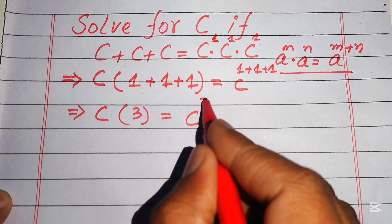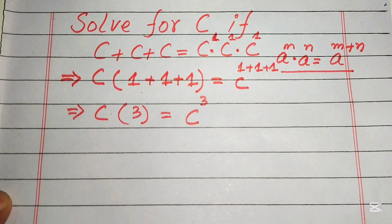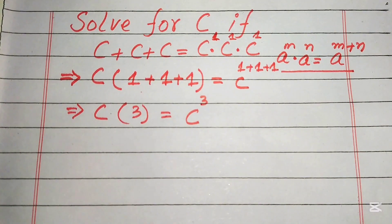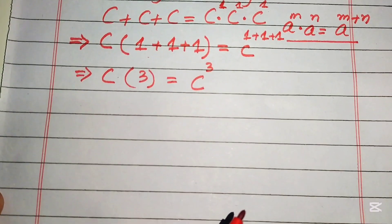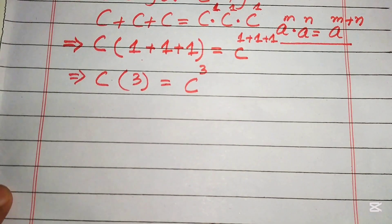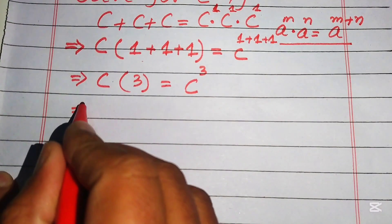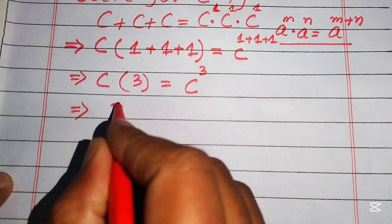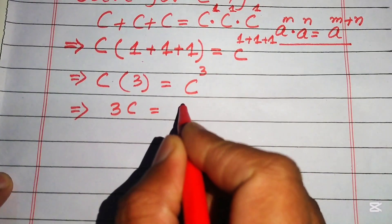Since we need to solve for c, on the left-hand side we have three c, and on the right-hand side we have c cubed.